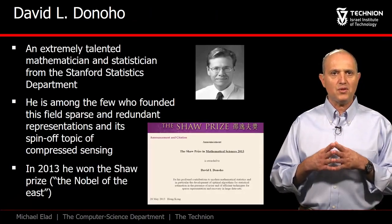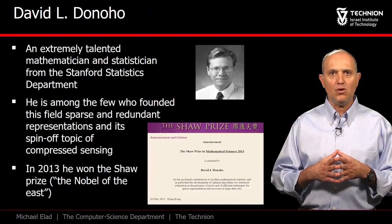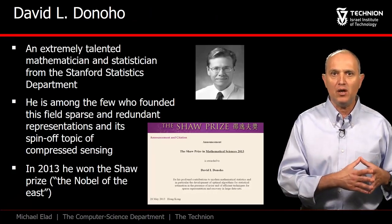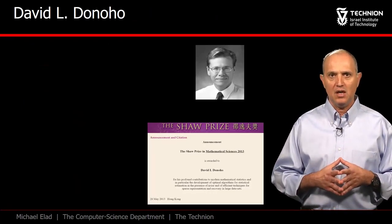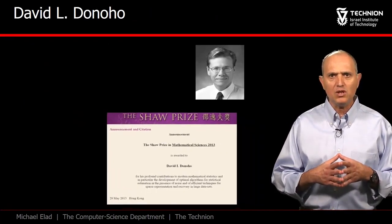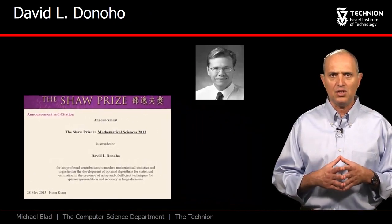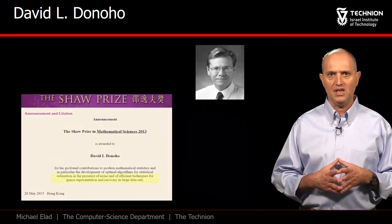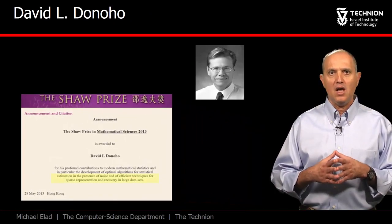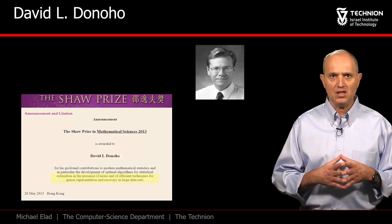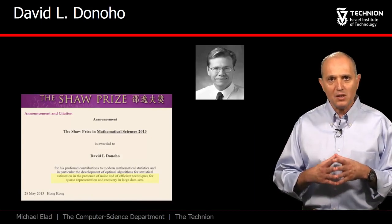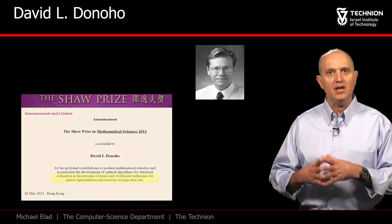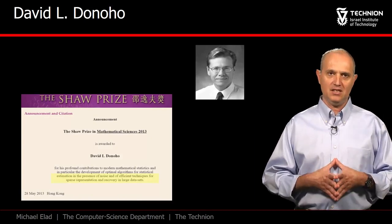In 2013, Donoho was awarded the Shaw Prize, also known as the Nobel of the East. Let's take a closer look at the citation for this prestigious award. It says: "Efficient Techniques for Sparse Representation and Recovery in Large Data Sets."